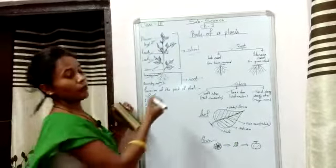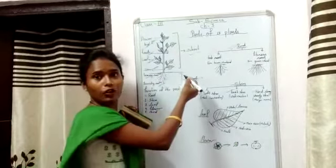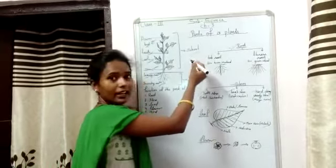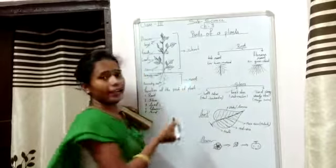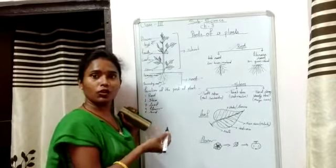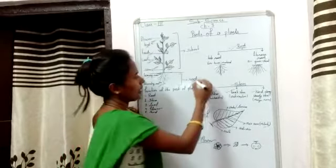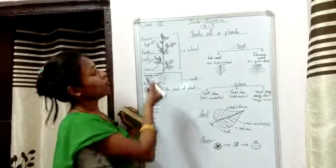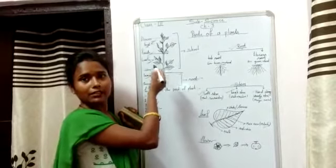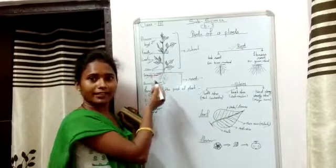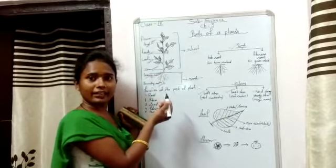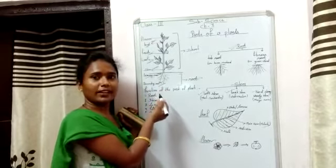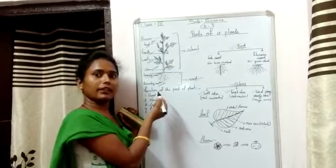The parts of plants which grow up from the ground are called the shoot. The shoot includes flowers, leaves, stem, fruit, and branches. The root can be divided into primary root and secondary root.